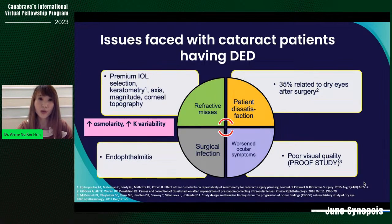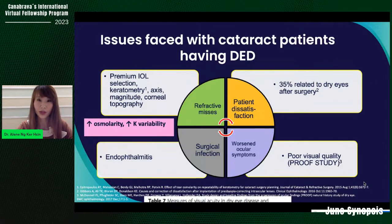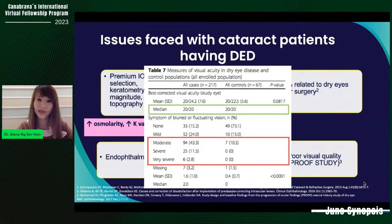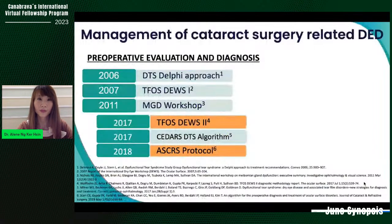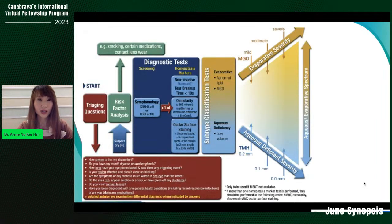Femtosecond laser-assisted surgery has a higher risk of dry eye symptoms compared to conventional phacoemulsification. If not addressed, tear film problems can lead to decreased predictability in IOL power selection, especially in premium IOLs — errors in the power and axis of the toric IOL, keratometry variability and abnormal corneal topography. Epitropolis et al. states that hyperosmolarity can cause higher keratometry variability. 35% of patient dissatisfaction was related to dry eyes after surgery, magnified in refractive cataract surgery with premium IOLs.